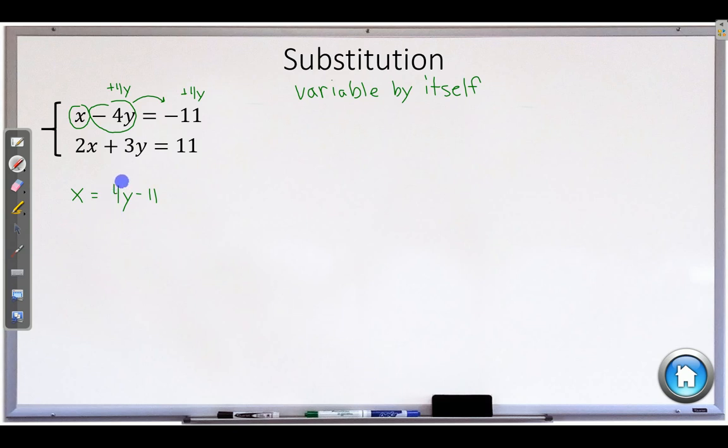And what we're going to do is take this and substitute it into the other equation for x. So another way of thinking of this equation is x is the same thing as 4y minus 11. So instead of x, we're going to write 4y minus 11. So I'm going to rewrite this equation over here. So we're going to have 2. But instead of the x, we're going to write what the x is the same as. It is the same as 4y minus 11.